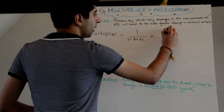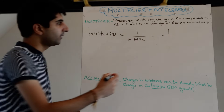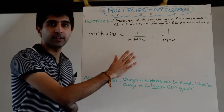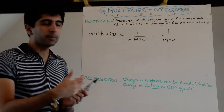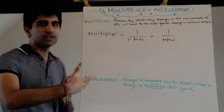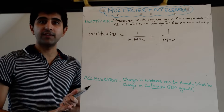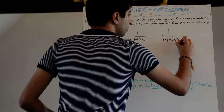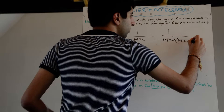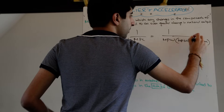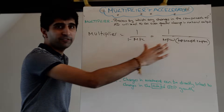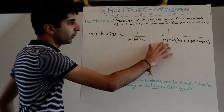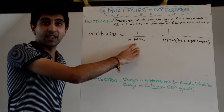We can also measure it going the other way. Instead of 1 over 1 minus the MPC, we could look at 1 over the marginal propensity to withdraw — that's just the opposite. Instead of consuming that extra pound, how much are you not consuming? How much are you taking away from the economy, either in terms of savings, taxation, or spending on imports? So that is the same as the marginal propensity to save, plus the marginal propensity to tax, plus the marginal propensity to import — all the different ways you could be taking money out of the circular flow of income.